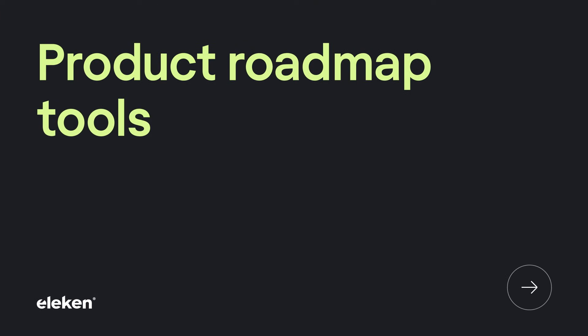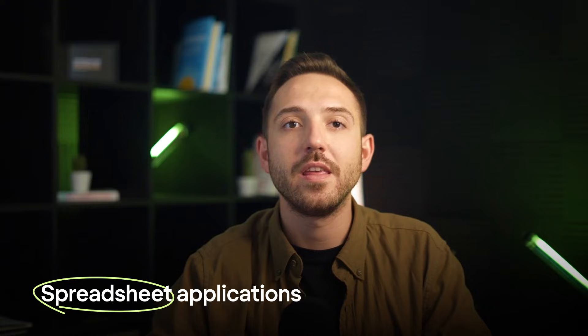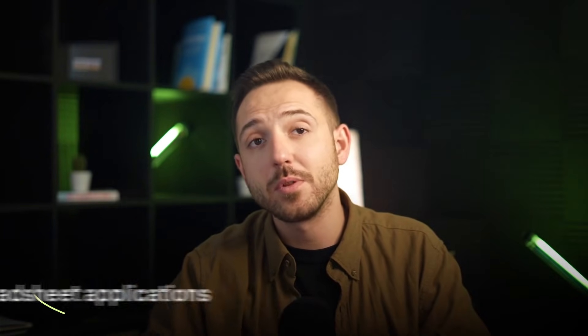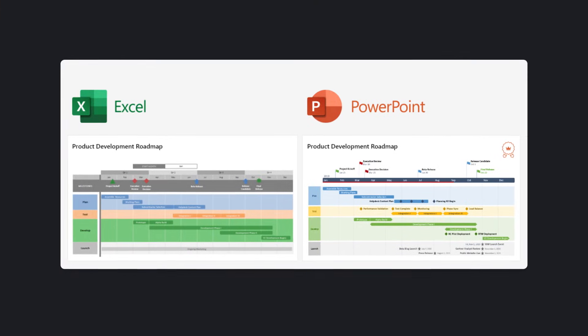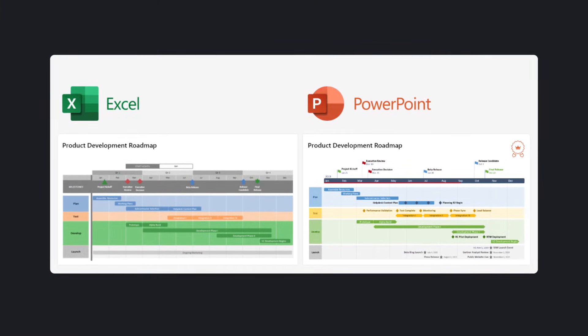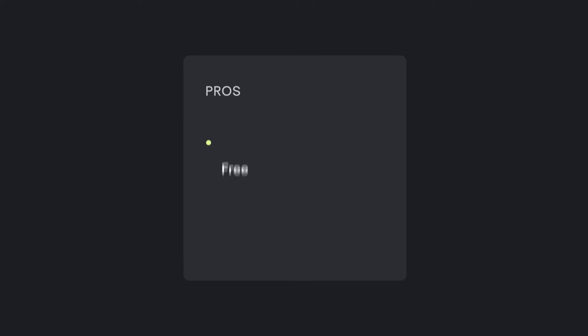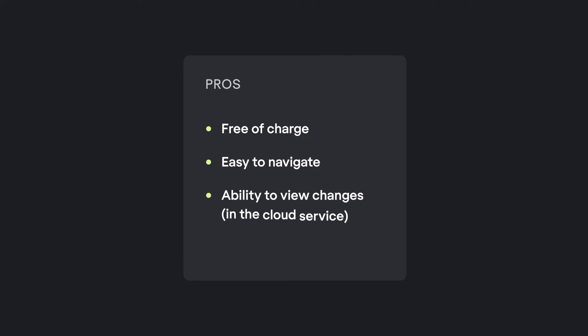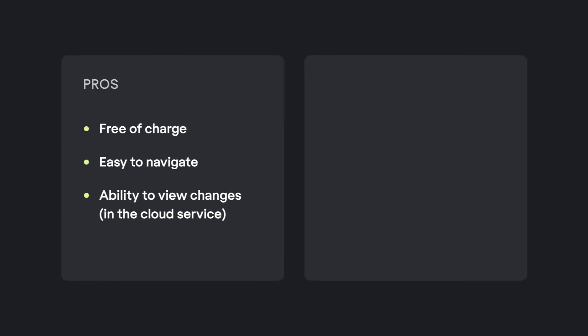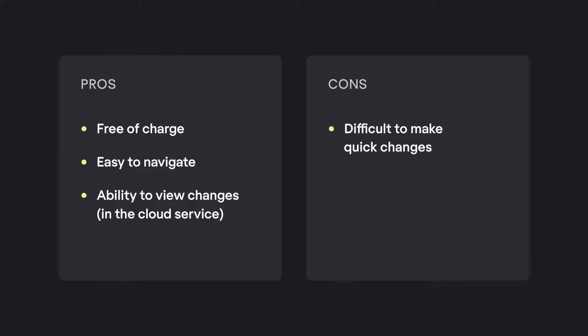The last thing I'll share with you today is a list of free and paid product roadmap tools. First on our list are spreadsheet applications. The easiest and completely free option is to create a roadmap in Excel, Google Sheets, or another spreadsheet application. Advantages: free of charge, easy to navigate, ability to view changes if it's in the cloud. Disadvantages: difficult to make quick changes, no templates.